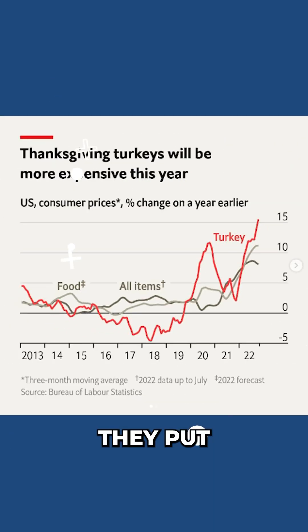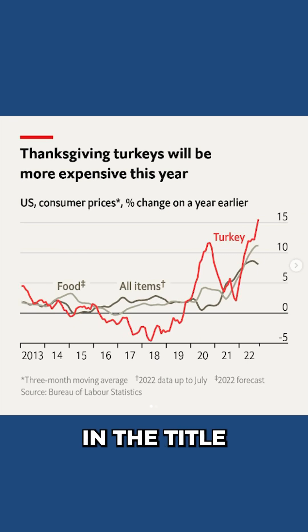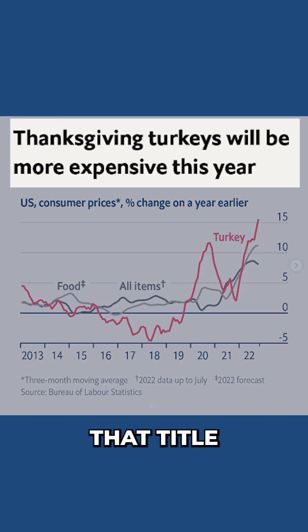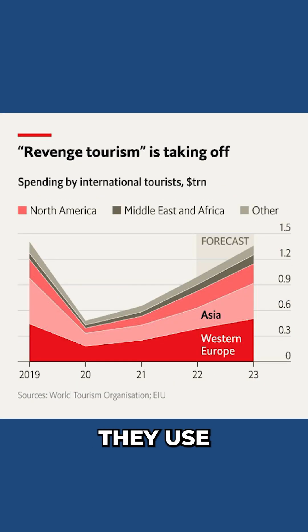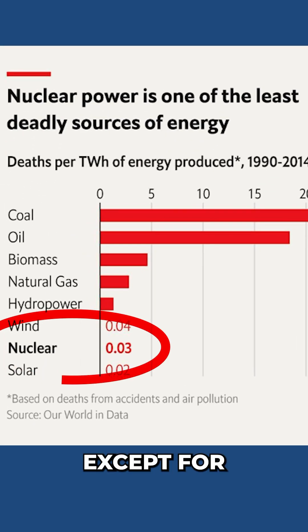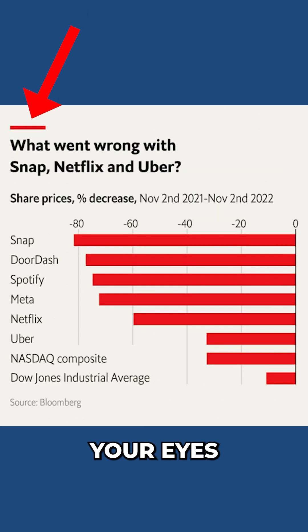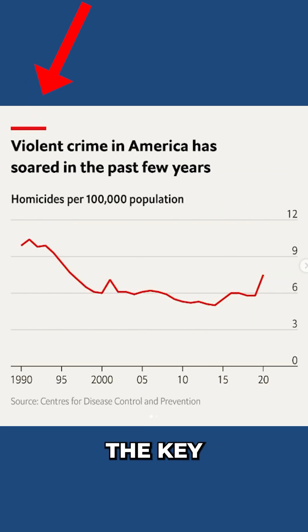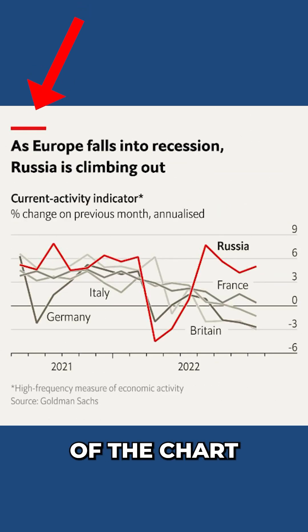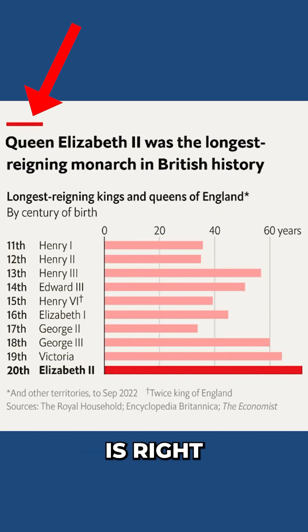The next thing they're really good at is drawing attention to the key insights of the chart. They put the key takeaway right in the title, and they make that title big and bold. Then in the chart itself, they use pretty muted colors, except for the data point they're trying to highlight. Even this red line at the top right here is meant to draw your eyes towards the key takeaway of the chart, which again is right in the title.